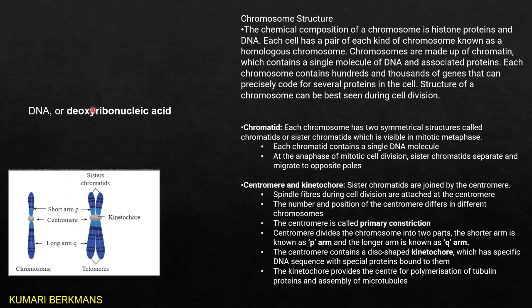The chromatin fiber during cell division condenses and forms chromosomes. Each chromosome divides into two chromatids, joined at the center at a region called the centromere. One arm is short, called the p-arm, and the other arm is long, called the q-arm. During cell division, these two sister chromatids separate — one part goes to one side and the other goes to the opposite side — forming new cells.